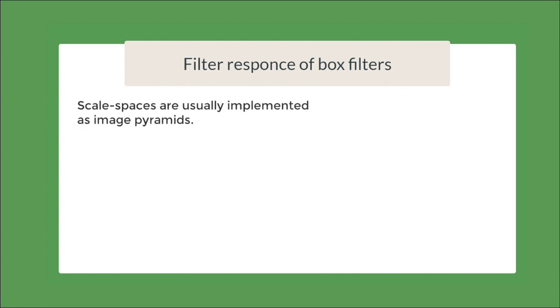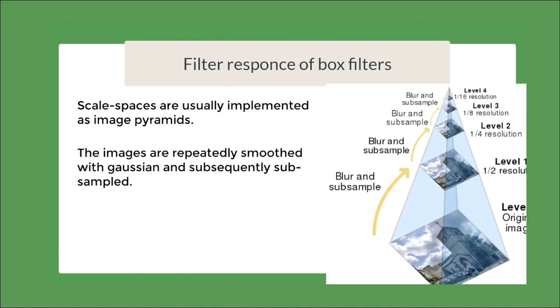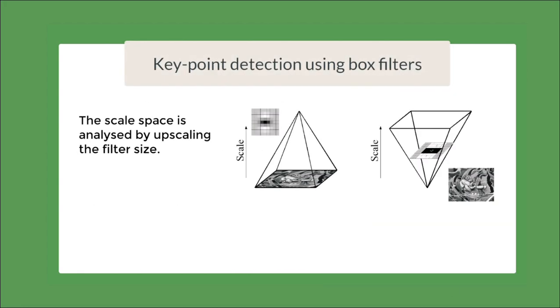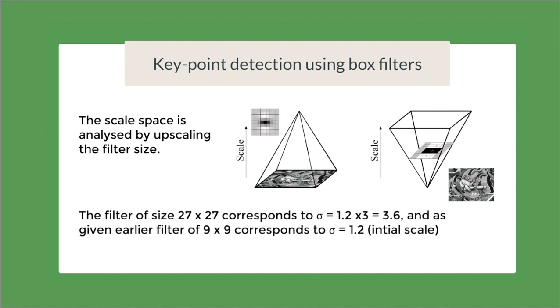Scaled spaces are usually implemented as image pyramids. The images are smoothed with Gaussians and subsequently subsampled. Due to use of box filters and integral images and the computational efficiency that they provide, we can directly use the upsampled filters that is filters of greater size on the original images. So, instead of image pyramid, we use filter pyramid. And also, the size of filter is directly proportional to the standard deviation of Gaussian filter. For example, 27 cross 27 corresponds to sigma equals to 3 times 1.2 which equals 3.6. And 9 cross 9 filter corresponds to sigma equals to 1.2 which is the initial scale.